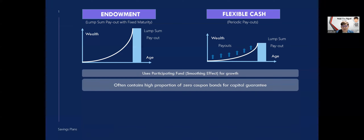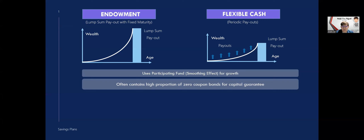At the same time, usually how these policies work is that they often contain high proportions of zero coupon bonds. This helps the insurer to guarantee you the capital. And that's why in a high interest rate environment, savings plans tend to perform a little bit better than when without the high interest rate environment.